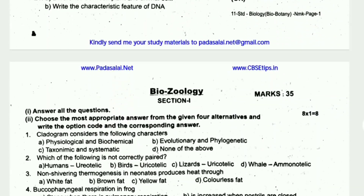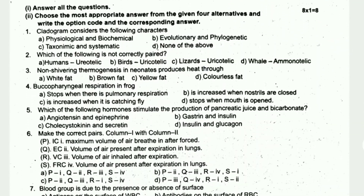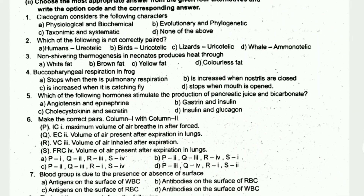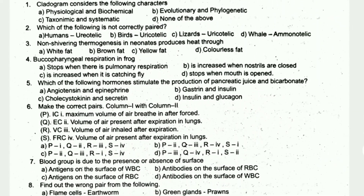Now let's look at the Zoology section — 35 marks. Section 1: choose the correct answer. A cladogram considers the following characters. Which of the following is not correctly paired?